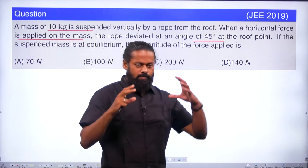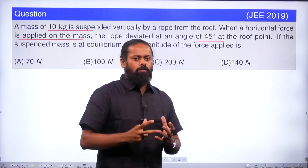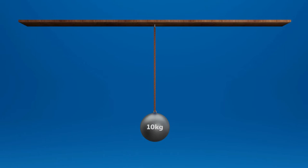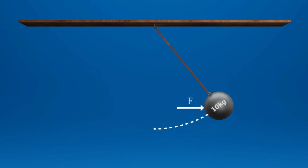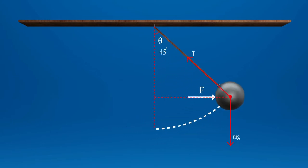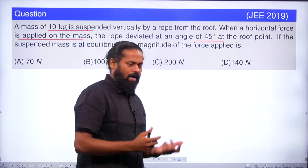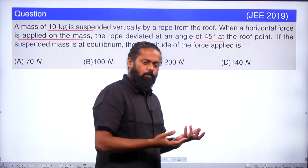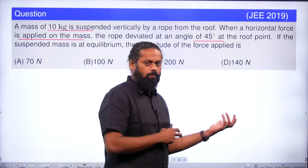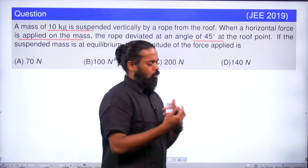First, let us see an animation of the situation. You can see that a mass of 10 kilogram is hanging vertically from the roof. Now a force is applied from one side, so it is moving to the other side and making some angle theta with the roof. We'll do a schematic diagram, then go to the free body diagram and apply the condition of equilibrium to solve the problem.